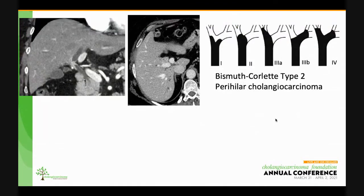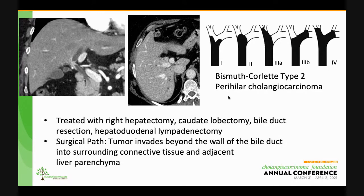Based on the biliary CT and the MRI, this patient has a Bismuth-Corlette type 2 perihilar cholangiocarcinoma. The tumor involves the roof of the common hepatic duct bifurcation but does not extend to the secondary bifurcation on either side. It involved the right hepatic artery, abutted the right portal vein, and extended into the right liver. So this patient was treated with right hepatectomy, caudate lobectomy, bile duct resection, and hepatoduodenal lymphadenectomy. Surgical pathology confirmed our imaging findings — the tumor invaded outside the wall of the bile duct into surrounding tissues and the adjacent liver.